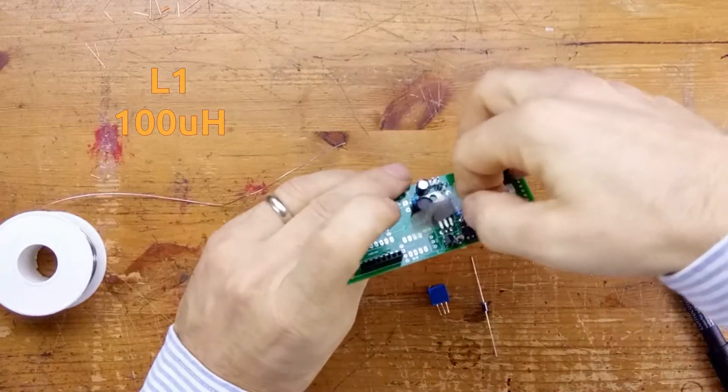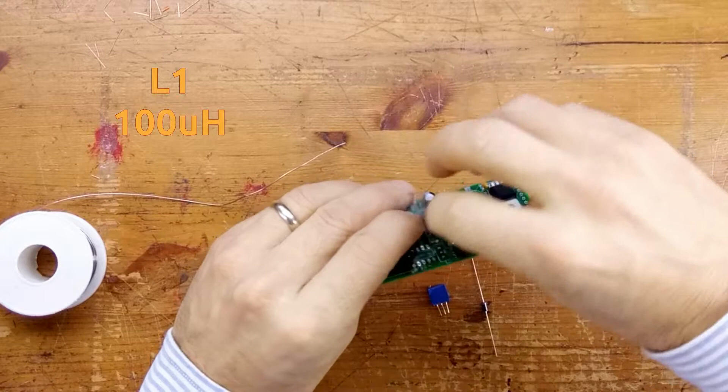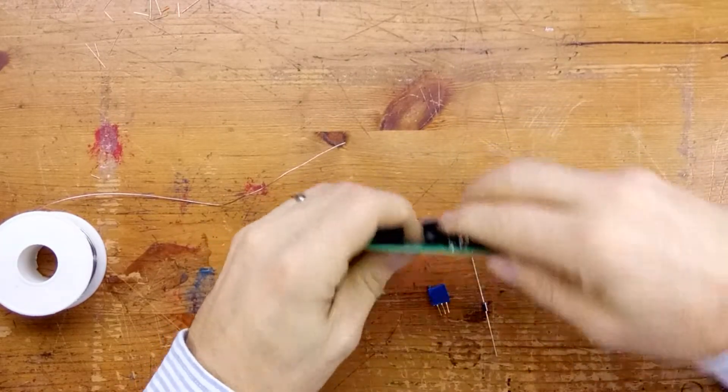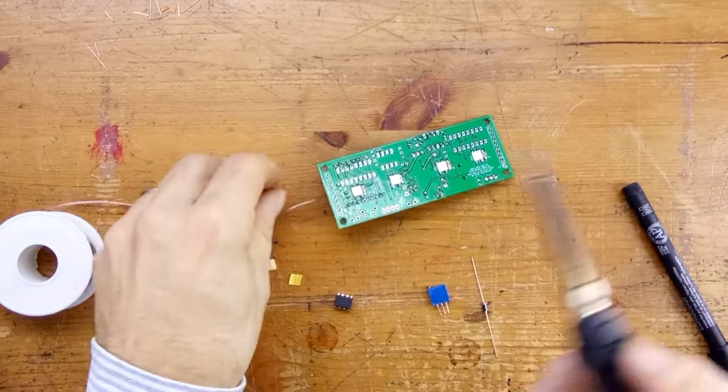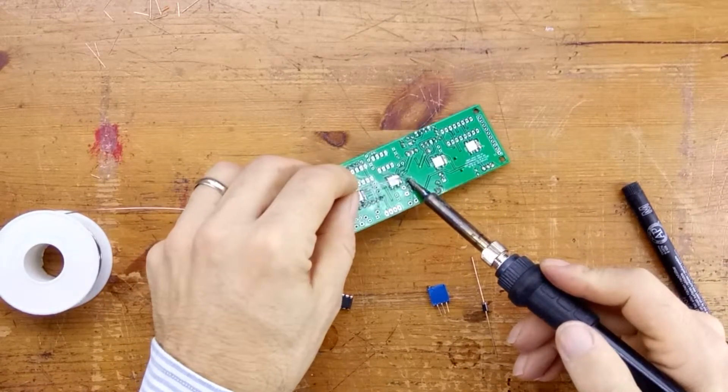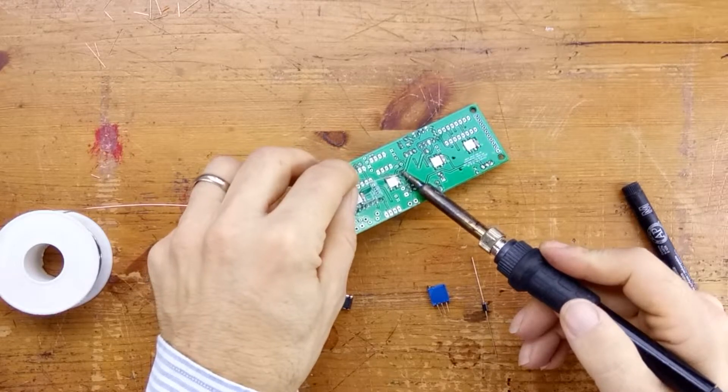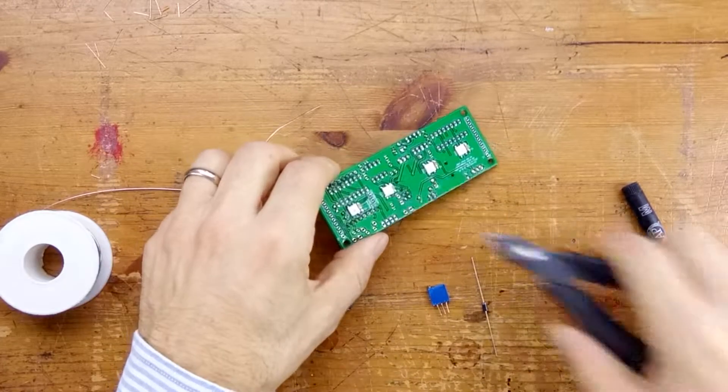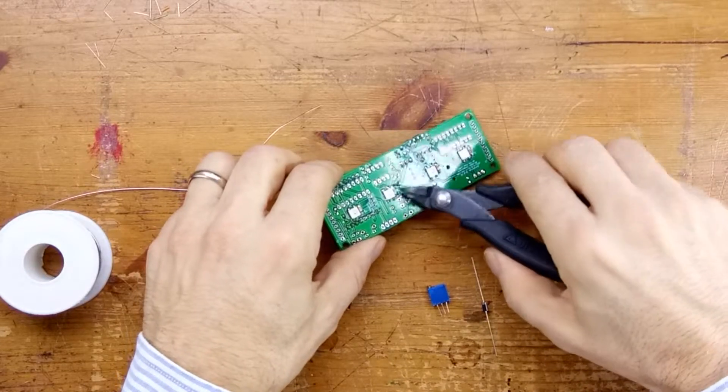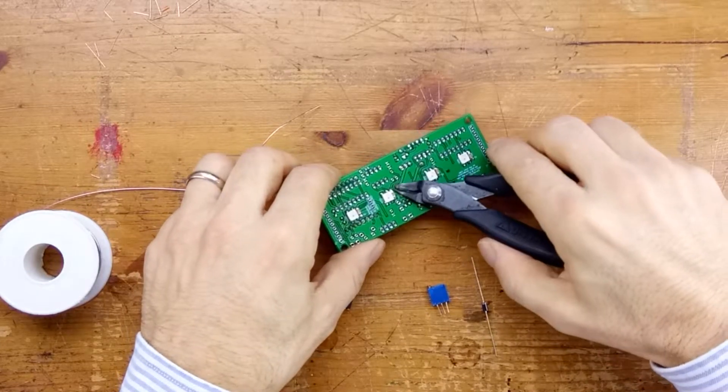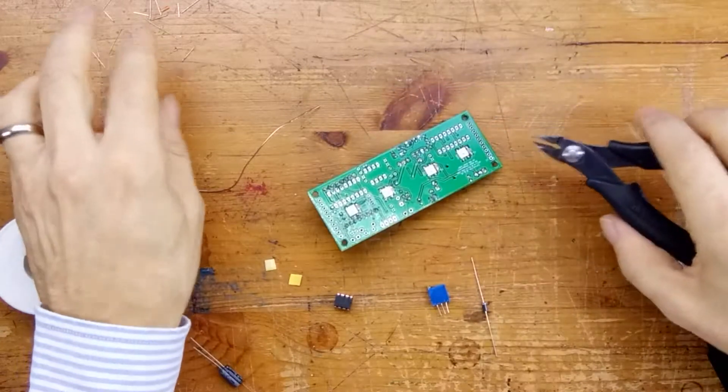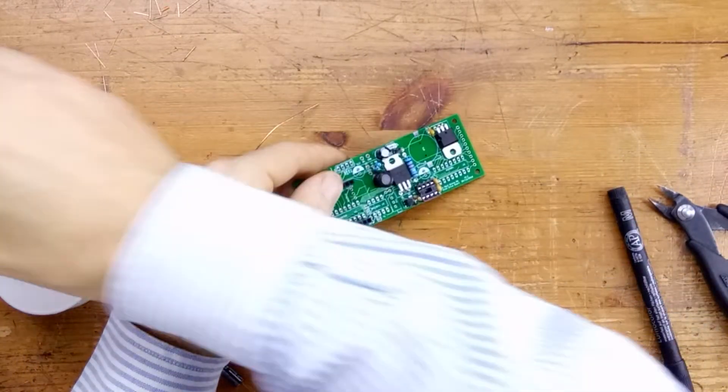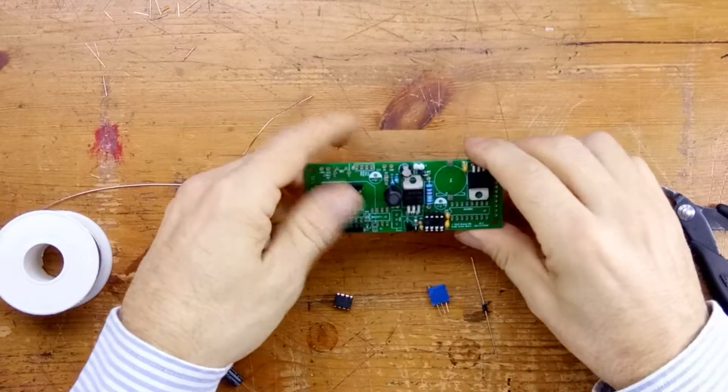Trim up, and once we've done that, we can come back and we can put in the inductor L1, which is 100 microhenries. It's not a polarized component, but I'm going to tape it in place, just to make sure it doesn't fall out again. Away with the tape. Looking good so far.